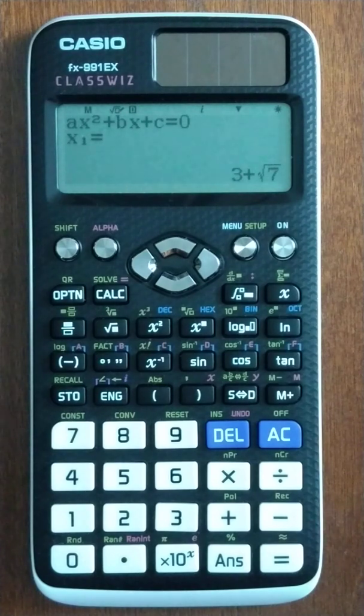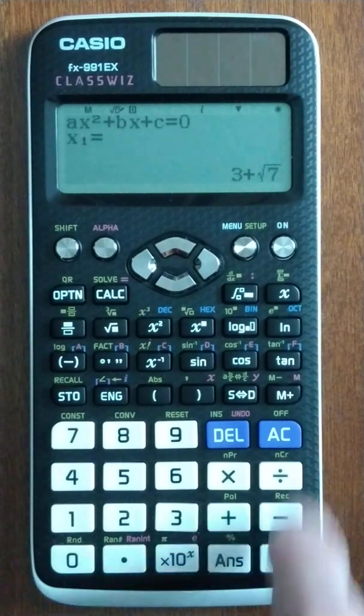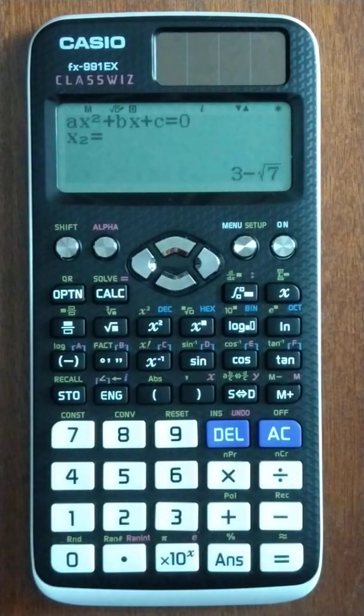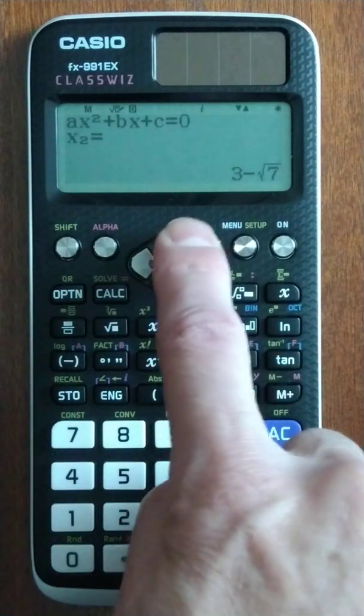Hit enter again, and out come our roots of 3 plus square root of 7 and 3 minus square root of 7, which is really nice. It's got the square root in there.